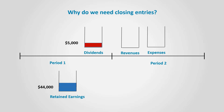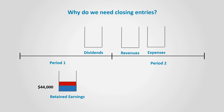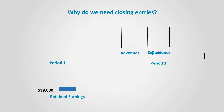The same thing applies to dividends, which are moved to retained earnings as well. Assuming that we have $5,000 of dividends, it will decrease retained earnings to $39,000. The dividends account will be reset to start accumulating dividends in the new period.